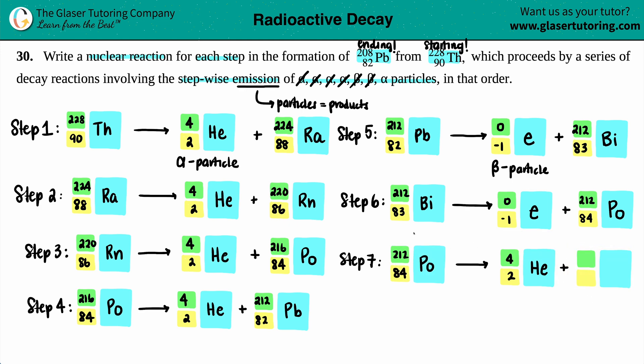212 minus 4 is a 208, and then 84 minus 2 is an 82. Who's 82? That's lead. We did it! There it is.